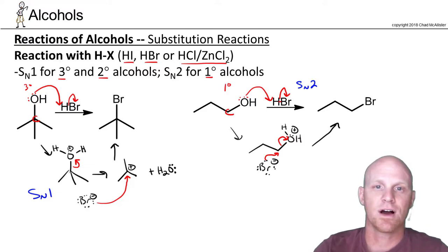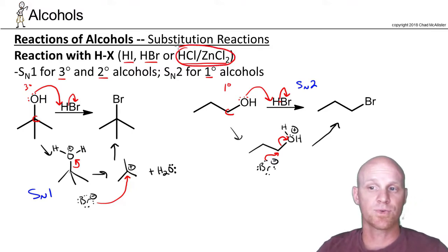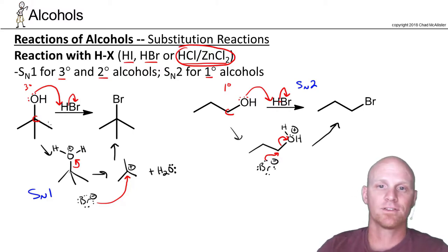One thing to note, I said we should talk a little bit more about the HCl and ZnCl2. It turns out HCl is the weakest of those three acids, HI, HBr, HCl. And it needs a little bit of a catalyst to make it work. So if we kind of look at this reaction and how it might play out with HCl.